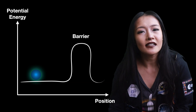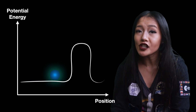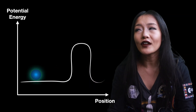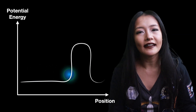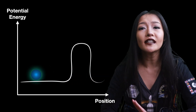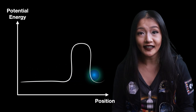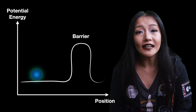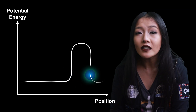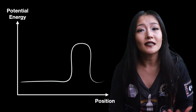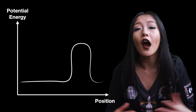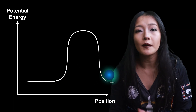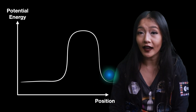You can imagine the barrier as like a hill. If the particle has enough energy, it could travel over the hill, but if it doesn't, then it would just bounce off it. However, in quantum mechanics, a particle can actually tunnel through this barrier, even if it has less energy, due to its wave-like nature. This is known as quantum tunneling. The probability of the particle reflecting off the barrier, quantum tunneling through it, or being absorbed by the barrier is dependent on the energy of the particle and the height and width of the barrier. The higher a barrier is and the wider it is, the lower the probability of a particle being able to pass through it via tunneling.